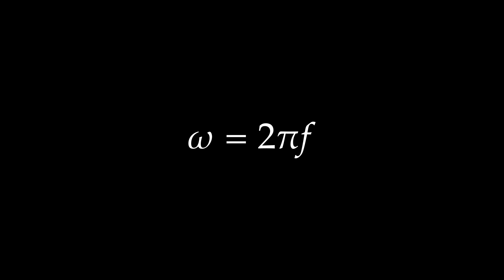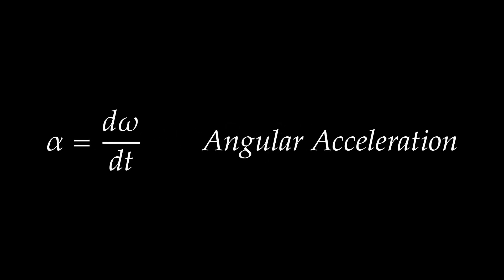Once I have angular velocity, I can ask: what if it changes as a function of time? The derivative of angular velocity with respect to time has a name — alpha, the Greek letter alpha — called the angular acceleration. The angular acceleration has units of radians per second squared, or simply per second squared, written s⁻².